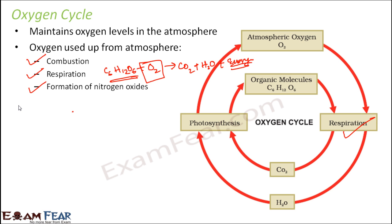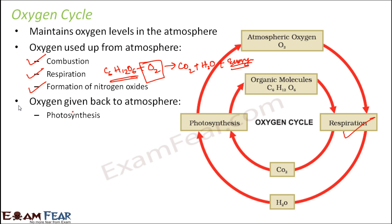Besides combustion and respiration, the formation of oxides also consumes oxygen — for example, formation of nitrogen oxides. Atmospheric nitrogen is not in a usable form for plants or animals, so it gets converted into ammonia, then nitrites, then nitrates. These nitrites and nitrates often form oxides, and to do so they need oxygen. So whenever any element wants to form its oxides it takes up oxygen from the atmosphere. These are the three basic areas where oxygen gets used up, with respiration being the primary one.